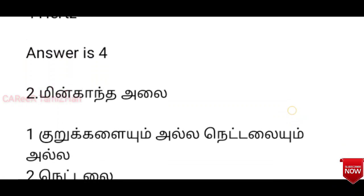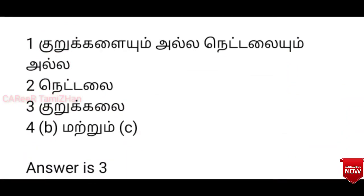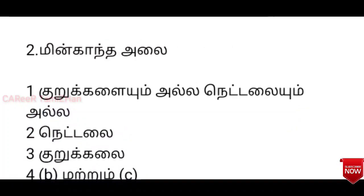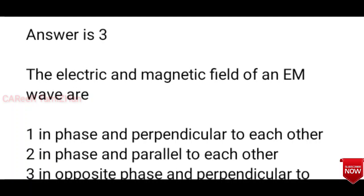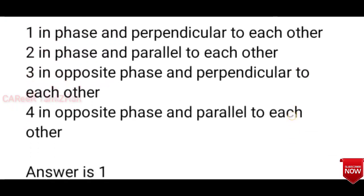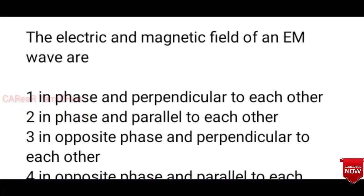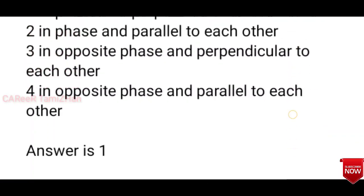Second question: The electric and magnetic field of an EM wave are — one of the answer options is that they are in phase and perpendicular to each other. The electric and magnetic fields of an EM wave are perpendicular to each other.